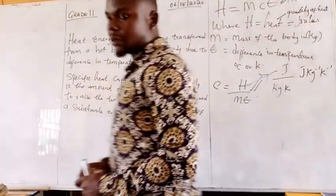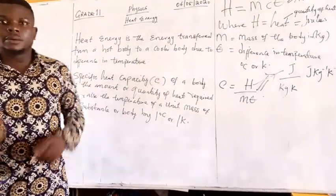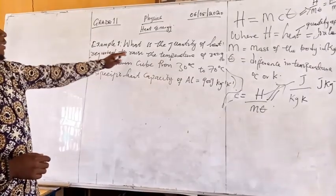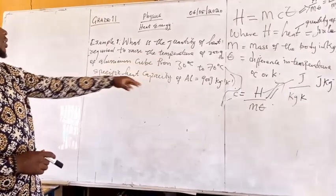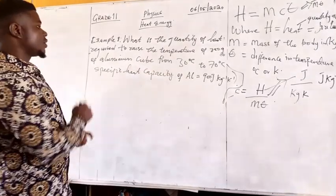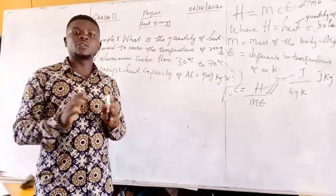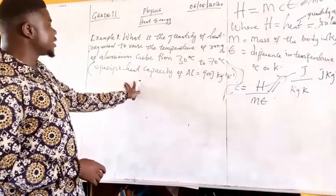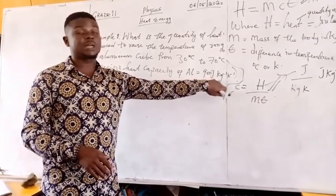Let's solve an example. What is the quantity of heat required to raise the temperature of 300 gram aluminum cube from 30 degrees Celsius to 70 degrees Celsius? The specific capacity of any substance is a constant; it must be given to you, except you are asked to look for it. We are given the specific capacity of aluminum to be 900 joules per kilogram per Kelvin.